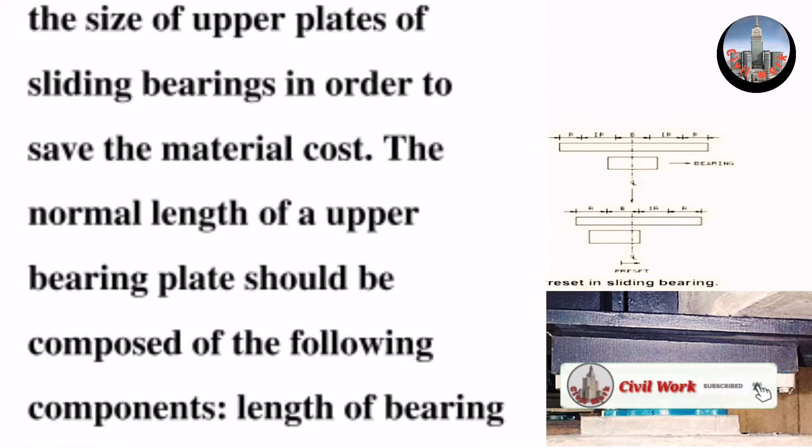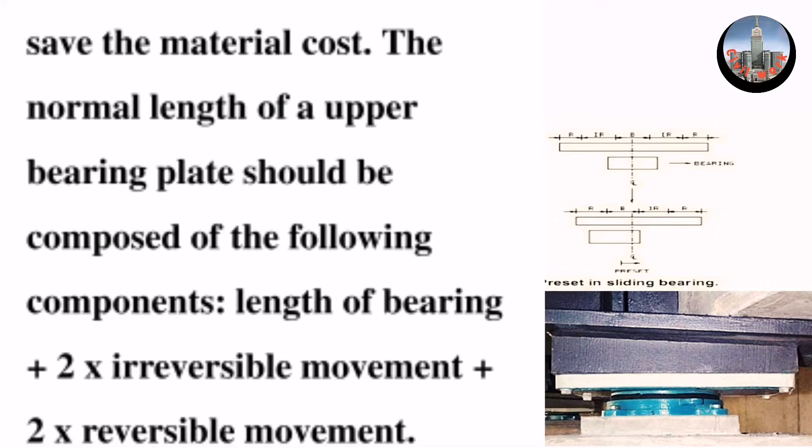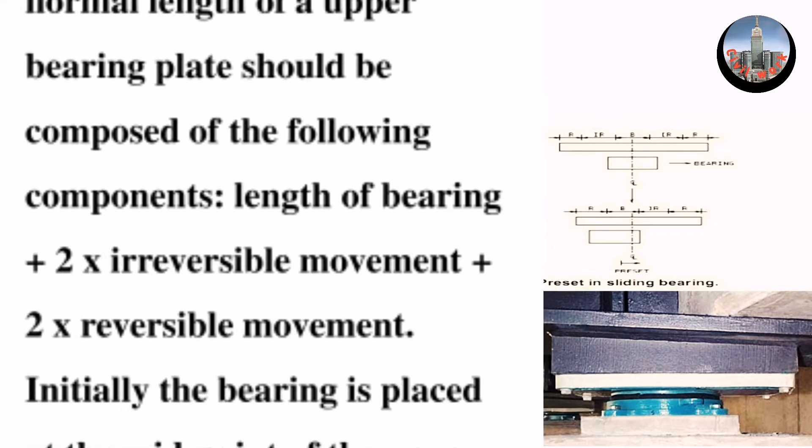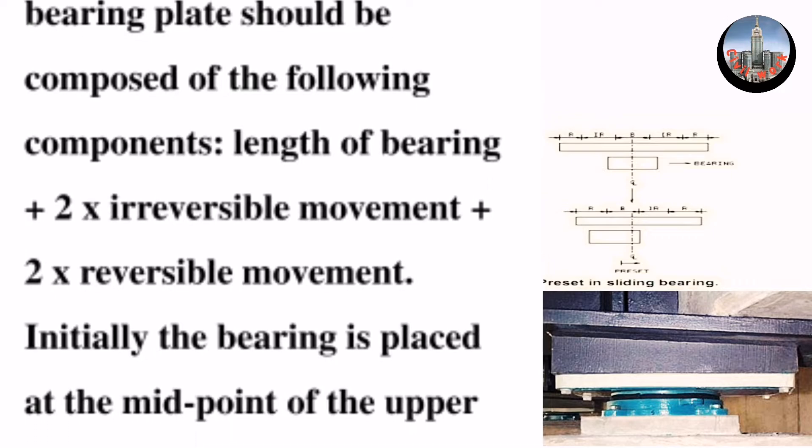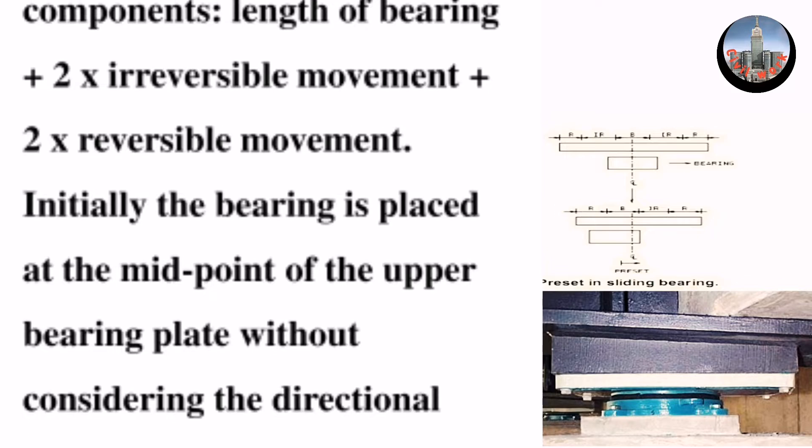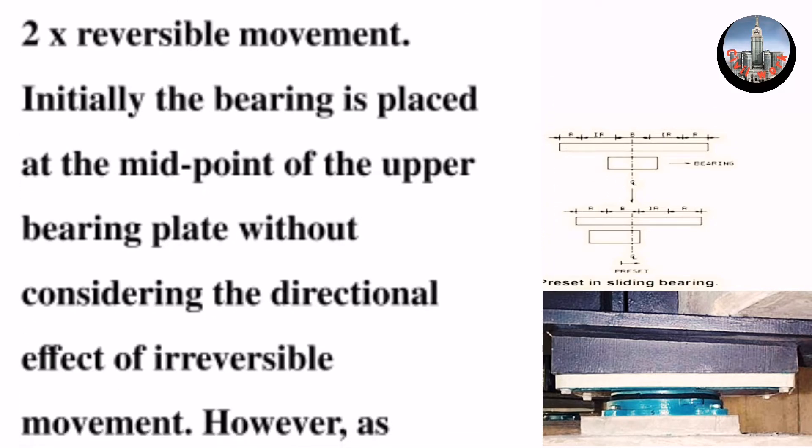The normal length of an upper bearing plate should be composed of the following components: length of bearing + 2 × irreversible movement + 2 × reversible movement. Initially, the bearing is placed at the midpoint of the upper bearing plate.